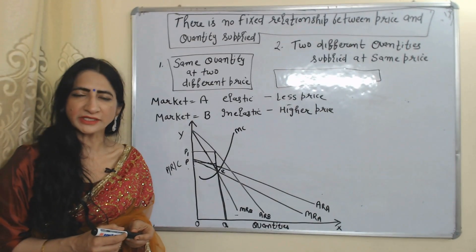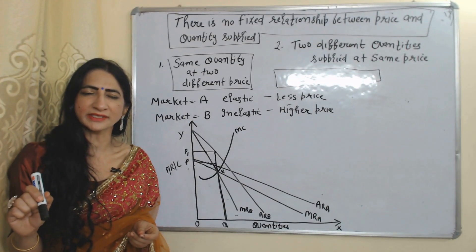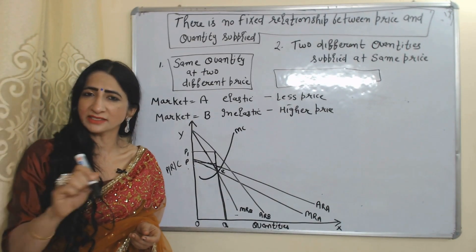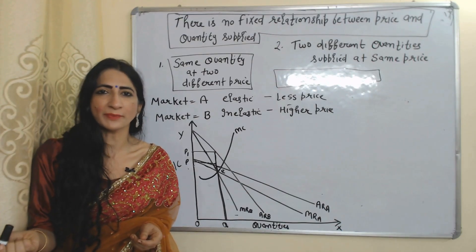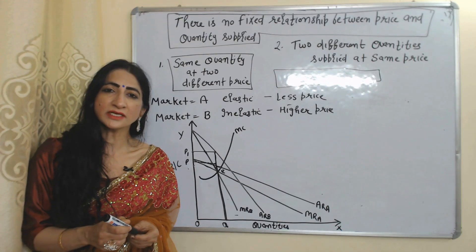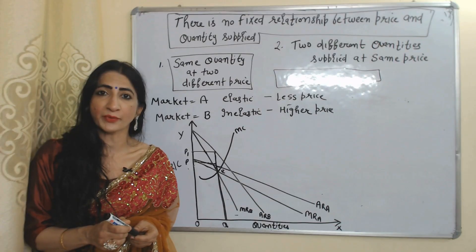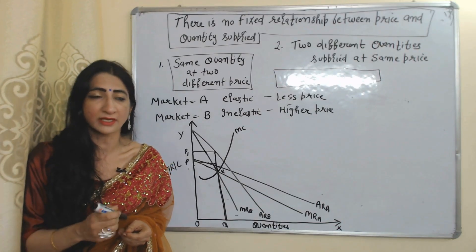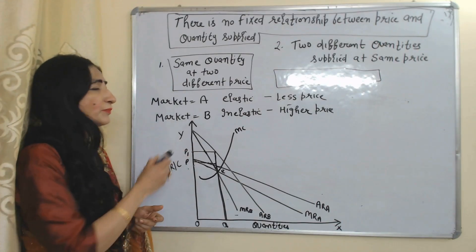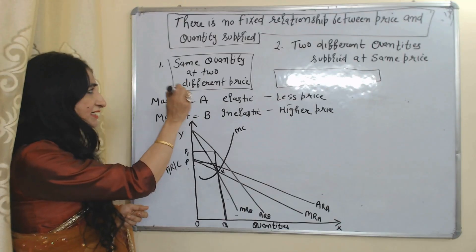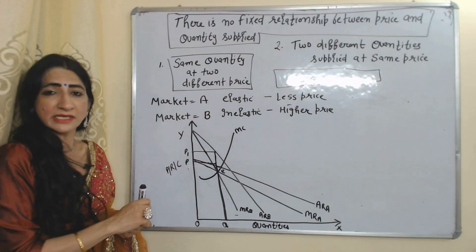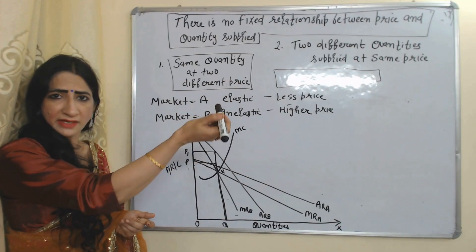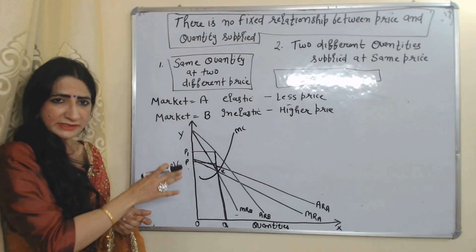That's why we can say there is no supply curve under monopoly. There is no fixed relationship between price and quantity supplied in the case of monopoly because monopoly can sell the same quantities at two different prices, or monopoly can sell different quantities at the same price.